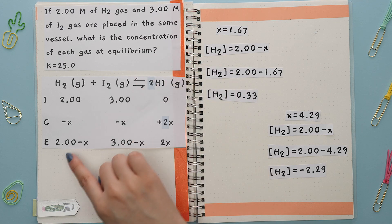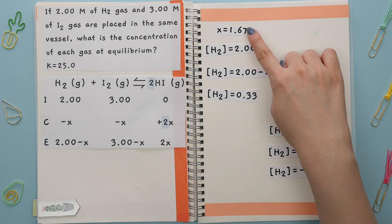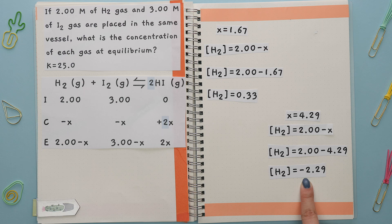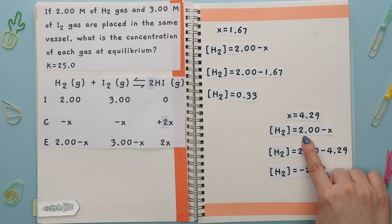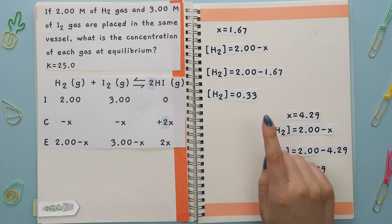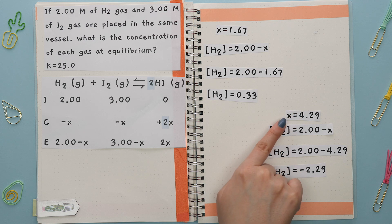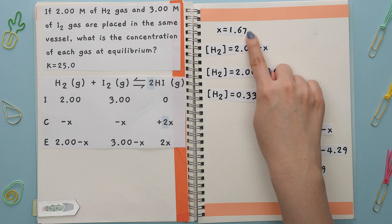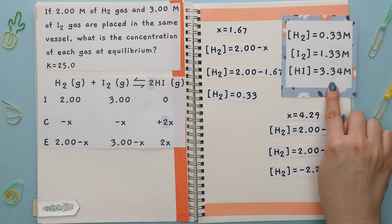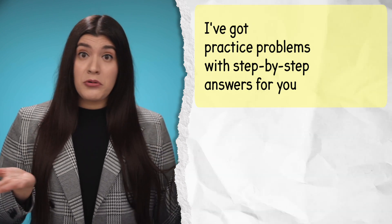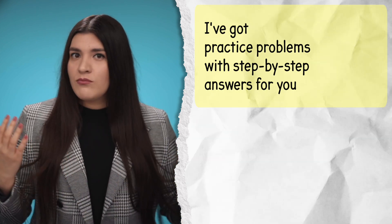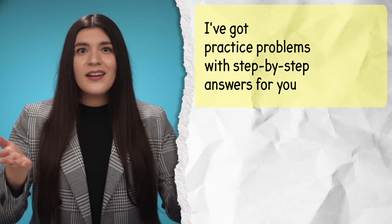Notice that both X values are positive. If we plug each X value into, say, the first reactant's equilibrium expression, we would see that one X gives a negative concentration — this is because that X value is larger than the initial concentration, making it wrong. To determine which X value to use when both are positive, choose the X value that is smaller; it must be less than the initial concentration you were given. This is the correct X value, and these are the correct concentrations at equilibrium. Click the link in the description to find practice problems with step-by-step video answers and more helpful tips and tricks for this topic.